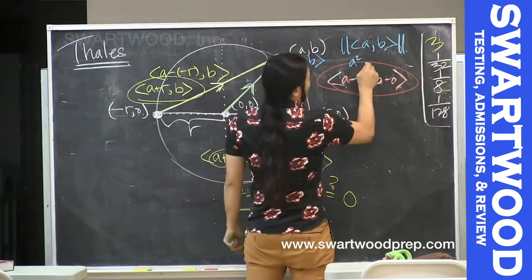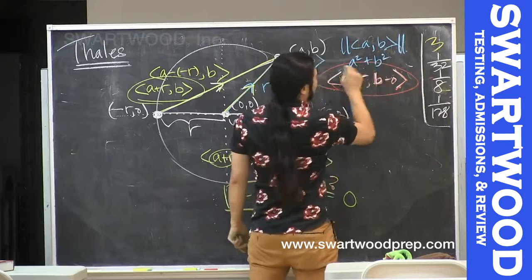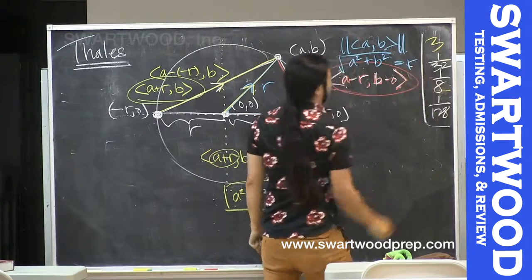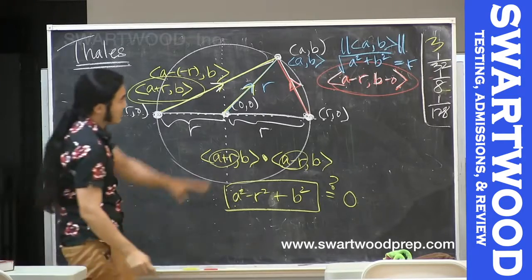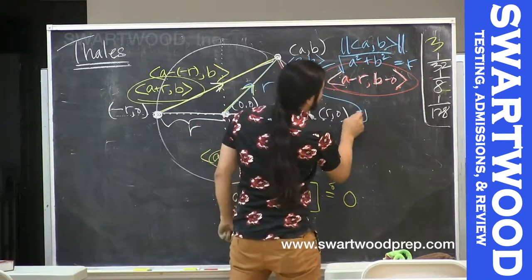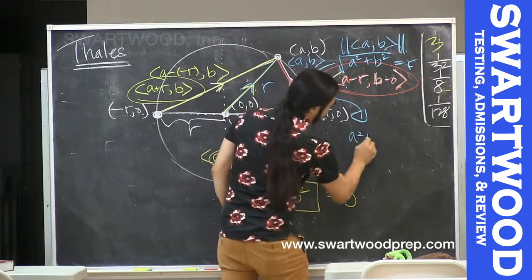But we also know the magnitude of AB is A squared plus B squared square root, and that's going to be R. So let's work this. This equation gives us, we'll square both sides, A squared plus B squared is R squared.